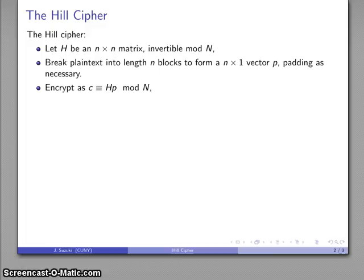And because H is an invertible matrix, I can recover the plaintext by multiplying by the inverse of the matrix, and that gets me my plaintext back.